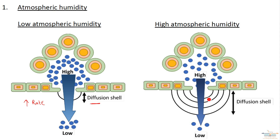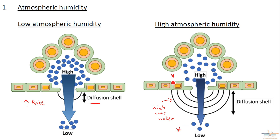On the next diagram we have high humidity, and therefore a thick diffusion shell. That diffusion shell represents a high concentration of water, which means the diffusion gradient from inside the leaf to outside is shallow — represented by a narrower arrow. So we have a shallower diffusion gradient, and therefore less water diffuses out of the leaf, resulting in a reduction in the rate of transpiration.